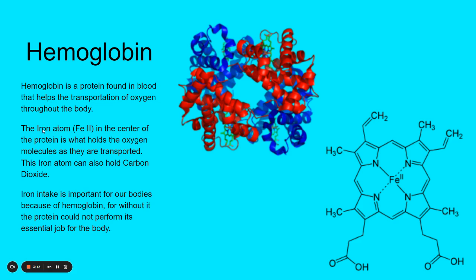So that iron is in the middle of the protein, and it holds oxygen, and it can also hold carbon dioxide. The reason that carbon monoxide is so poisonous is because carbon monoxide also bonds to this iron and it will not unbond. So that's why if you breathe in too much carbon monoxide, you can die — it's basically taking your hemoglobin out of commission. They can't function because that iron is taken up by carbon monoxide and will not unbond with it.